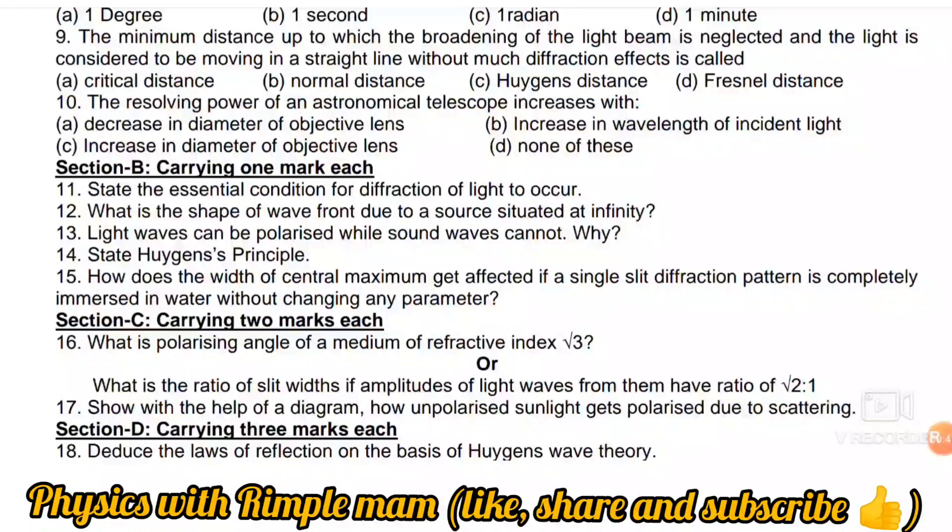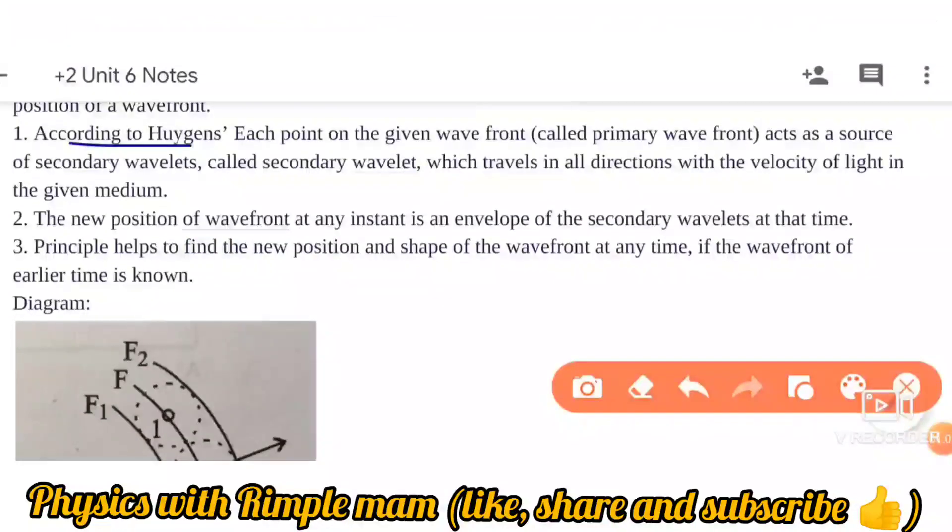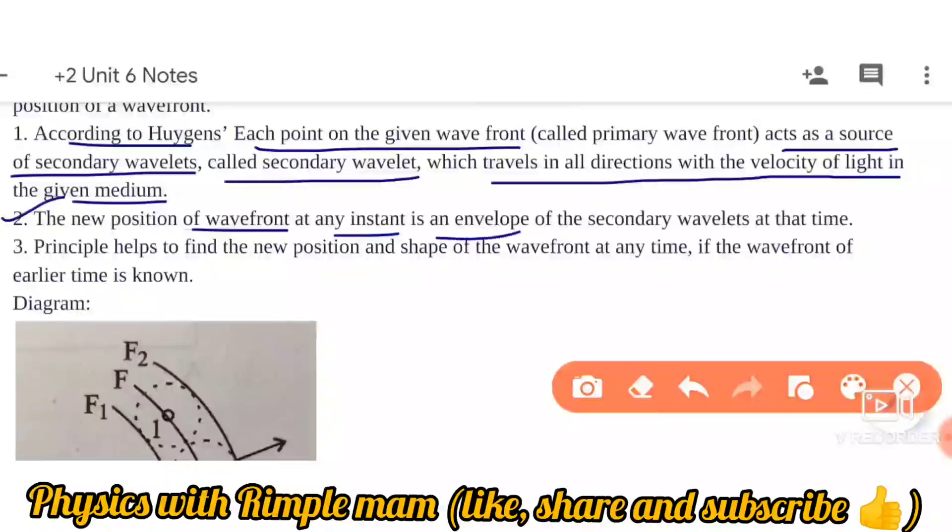Question 14: State Huygens principle. This is a most important question, so write these points carefully. Since it's a one mark question, you can write just the points. Number one: According to Huygens, each point on a given wavefront acts as a source of secondary wavelets which travel in all directions with the velocity of light in the given medium. Second: The new position of a wavefront at any instant is an envelope. This principle helps to find the new position and shape of a wavefront at any time. So you can write these two points for Huygens principle.